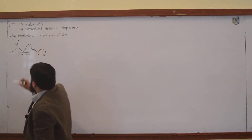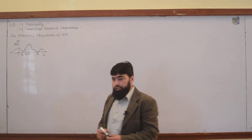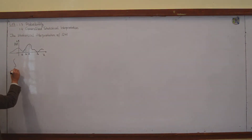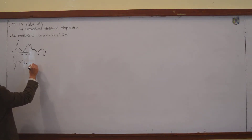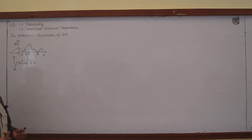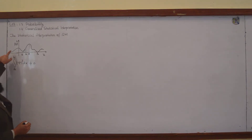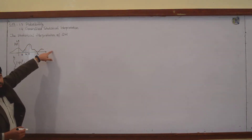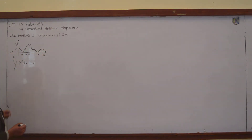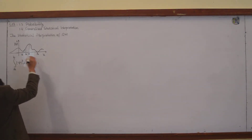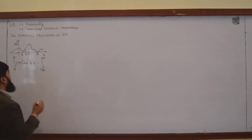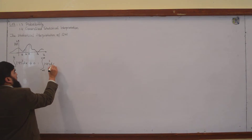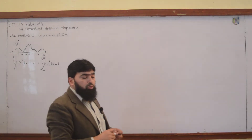If I select the range from a to b, the integral from a to b of psi mod square dx will not be equal to zero — it will have some value. But to get the full probability, I have to integrate from minus infinity to plus infinity, since this function starts from minus infinity and ends at infinity. In order to normalize, the integral from minus infinity to plus infinity of psi mod square dx will be equal to 1, which is the maximum probability — 100 percent.